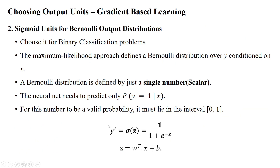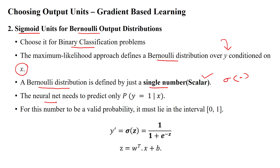The second activation function is the sigmoid activation function, used for Bernoulli output distributions. If our data has binary class classification, we can use the sigmoid activation function. The maximum likelihood approach defines a Bernoulli distribution over the actual outputs y conditioned on the input features x. The Bernoulli distribution is defined by a single scalar value as output, and the neural network needs to predict only the probability of y equal to 1 given input features x.